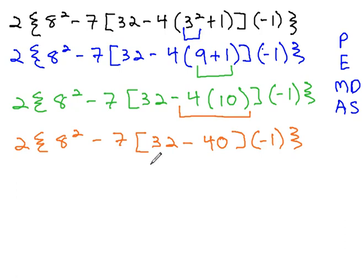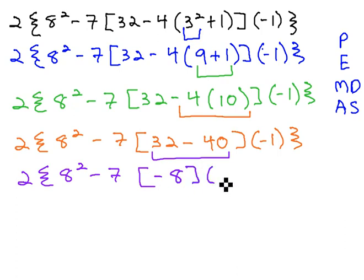We still aren't done inside those parentheses, so we'll keep working those out. 2 times 8 squared minus 7 times 32 minus 40 is negative 8, times negative 1, and close the squiggly.